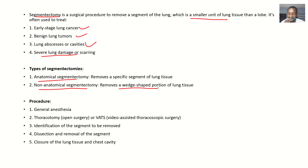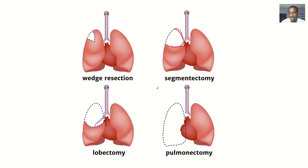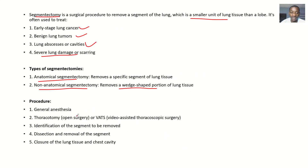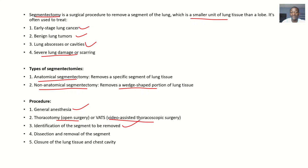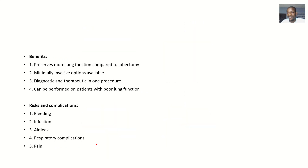Talking about the procedure — of course this is invasive, because to get to the lungs you must go through the chest cavity. The patient is given general anesthesia. You can do an open surgery or a video-assisted thoracoscopic surgery. Then you identify the segment that has a problem, dissect and remove it. After you're done, you close the chest cavity and the lungs, and take the patient back to recovery. Simple as it sounds.